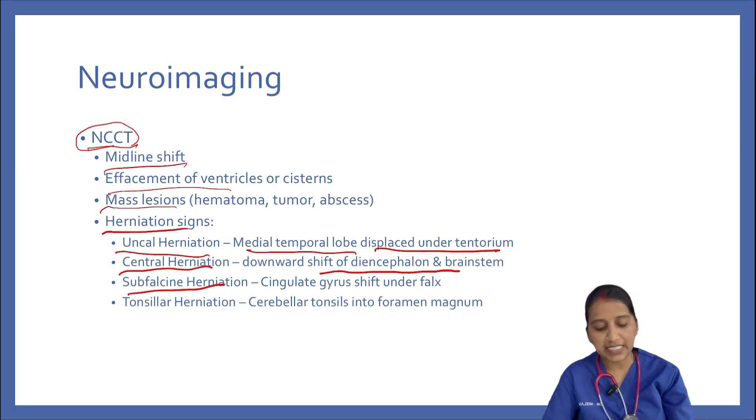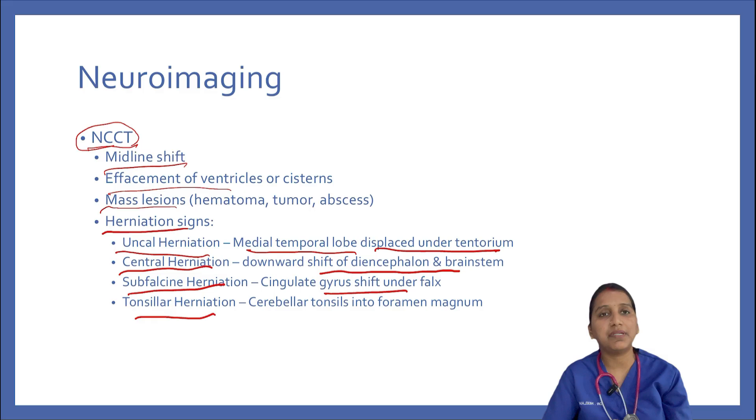In subfalcine herniation, the cingulate gyrus shifts under the falx. In tonsillar herniation, the cerebellar tonsils enter into the foramen magnum.